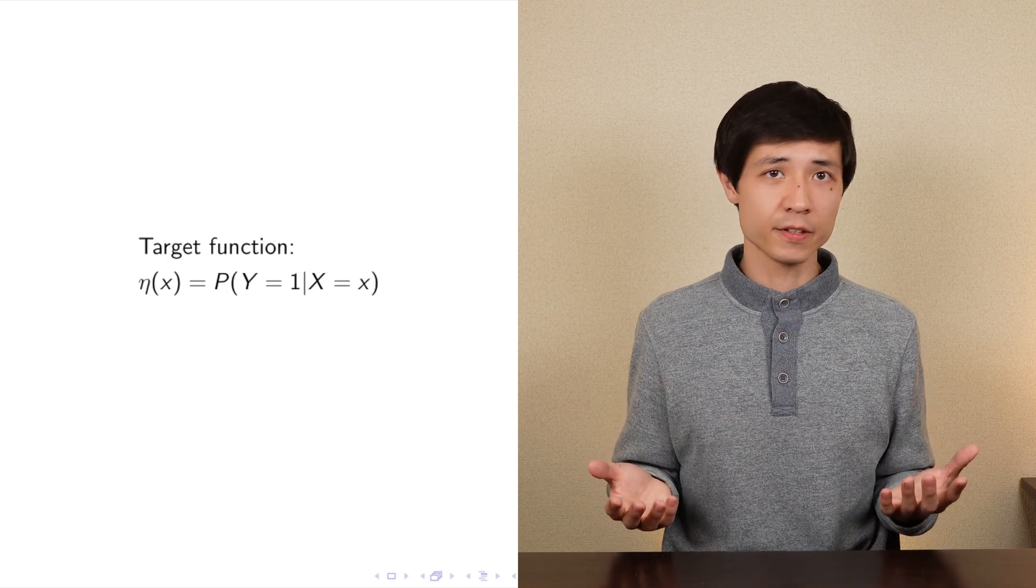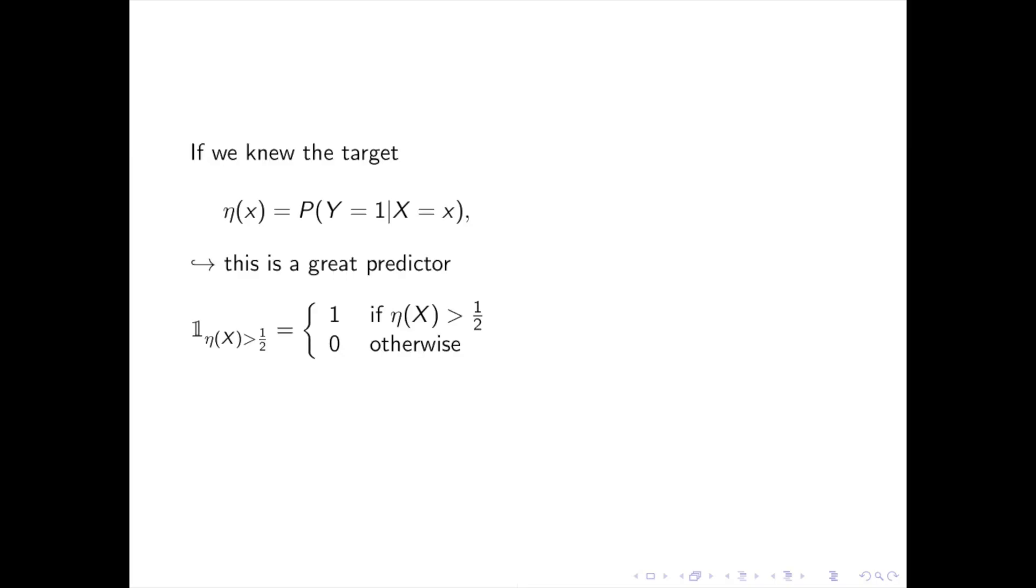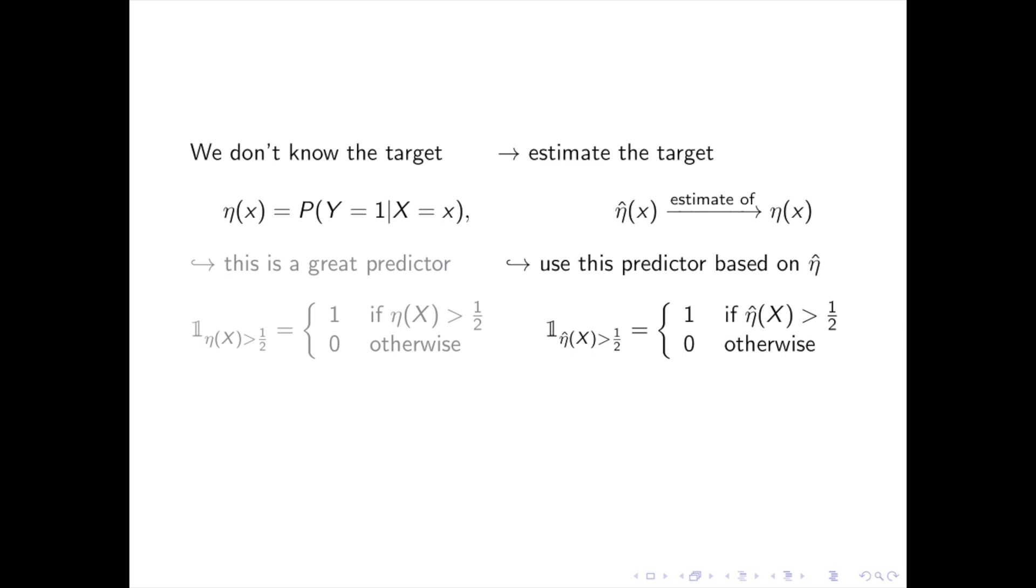Let eta be the target function, then if we knew eta, we can easily derive the best predictor of y given x, whose values are in 0,1. We do not know eta, but if we can estimate it with some eta hat, then we can also define its associated predictor by replacing eta by eta hat in the previous formula. And therefore, the problem boils down to finding a good estimate, eta hat, of a target function eta.